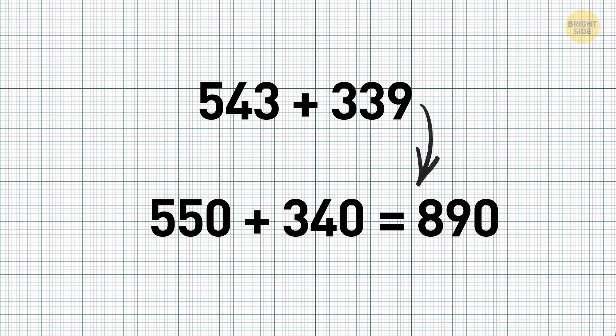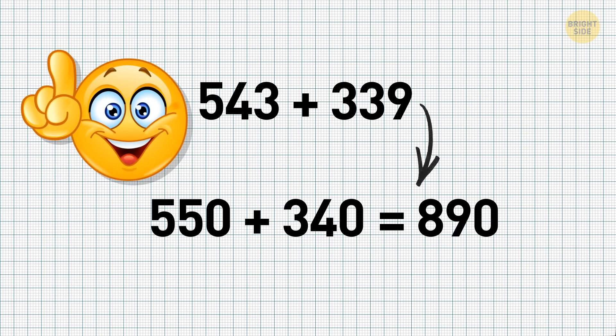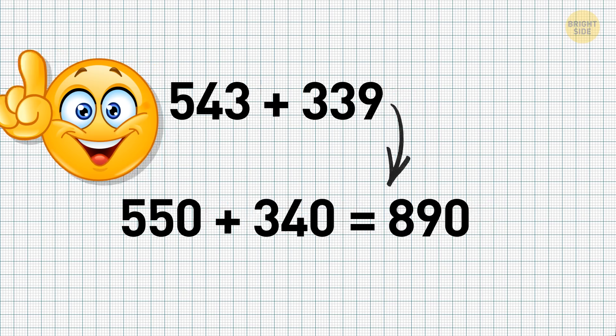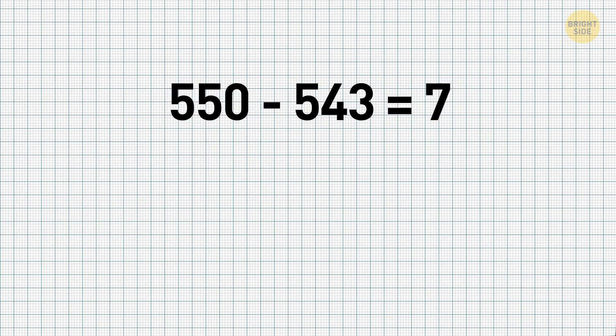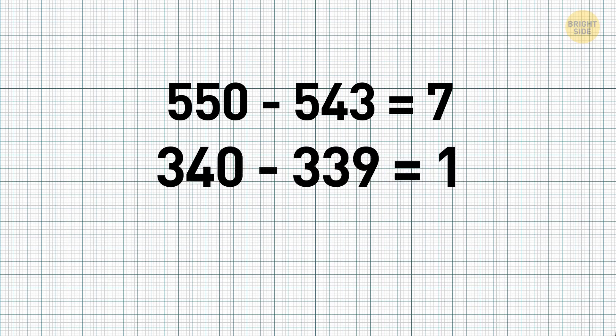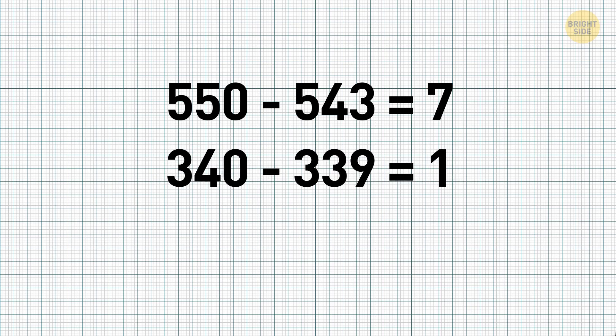To determine that, we need to remember how much we added to the initial numbers. That would be easy. We just need to subtract the original numbers from the rounded-up ones. The results look like this: 550 minus 543 will be 7, and 340 minus 339 will be 1.